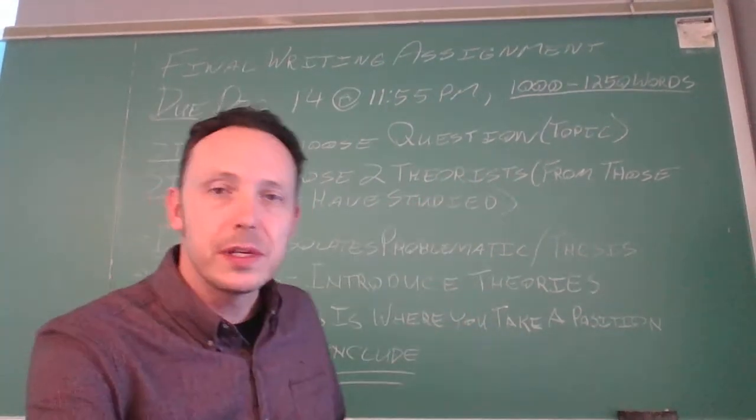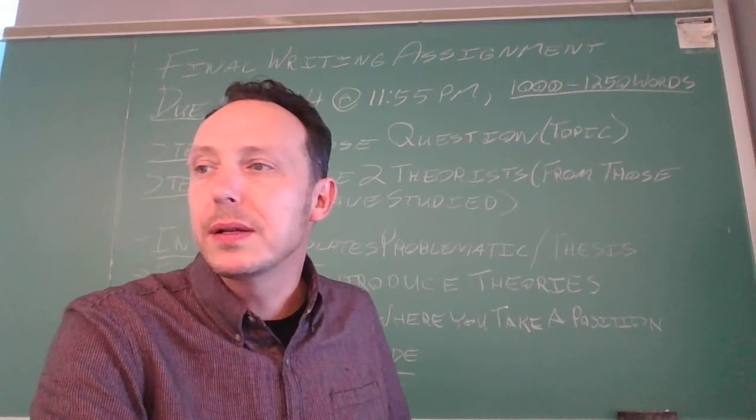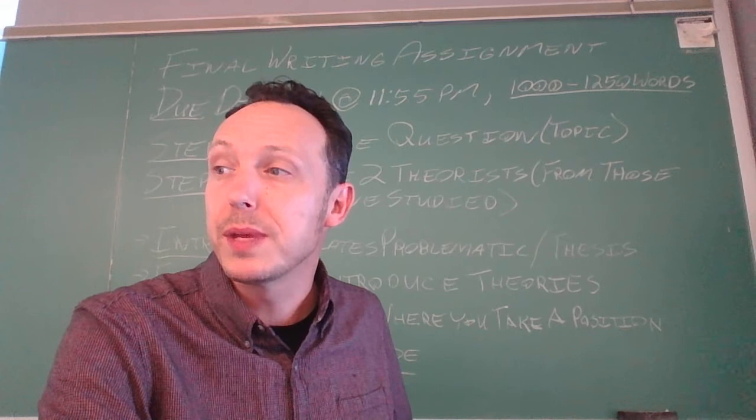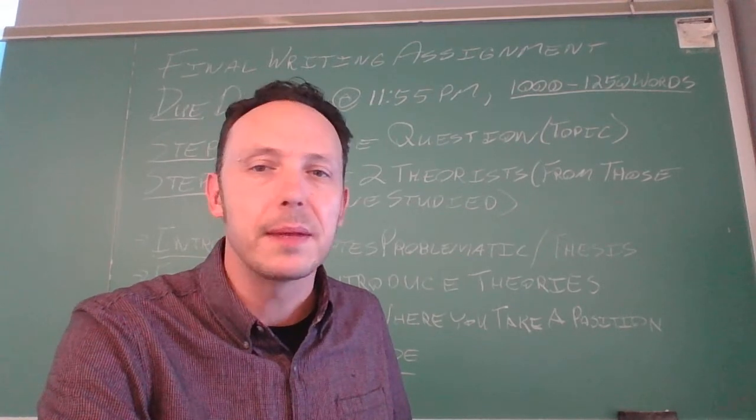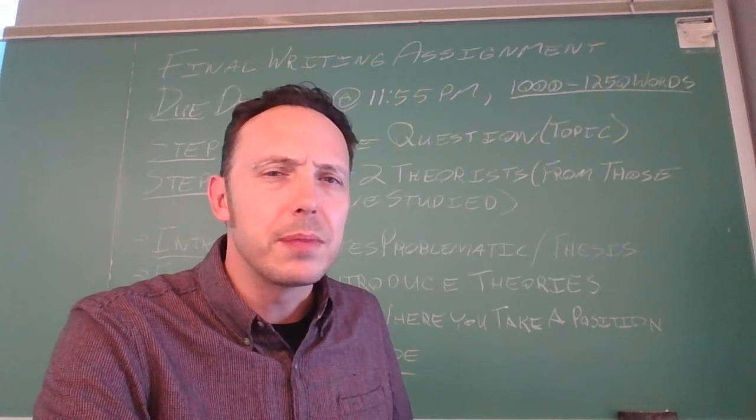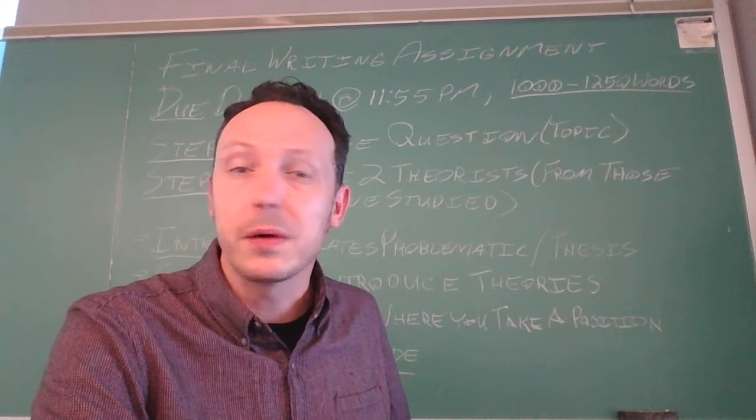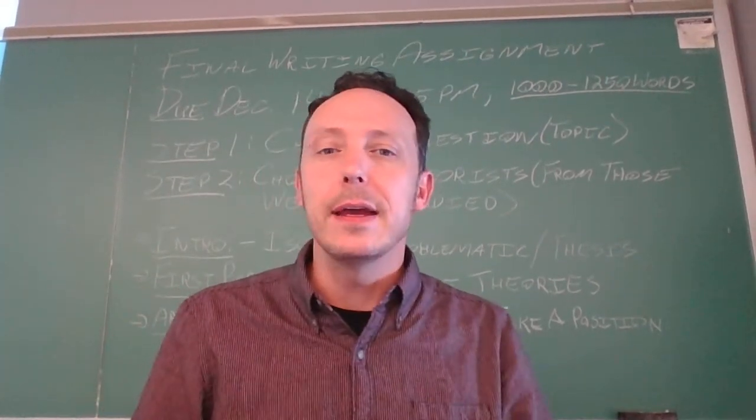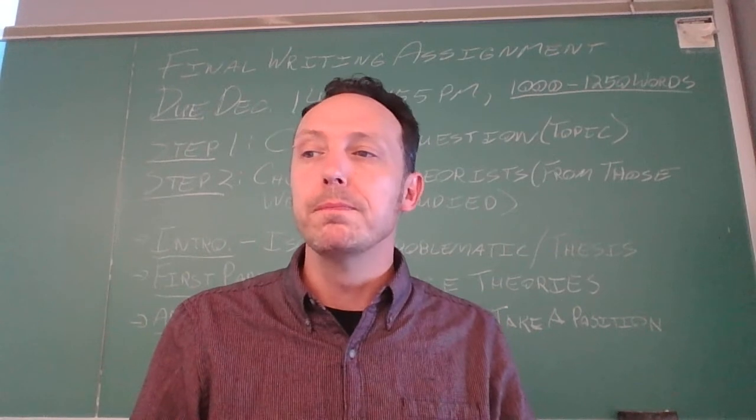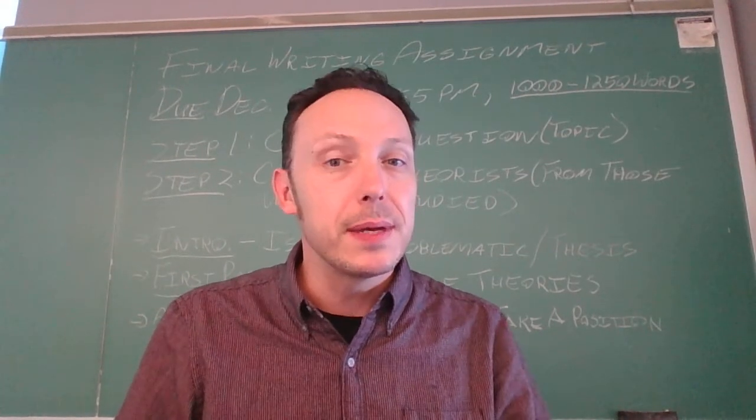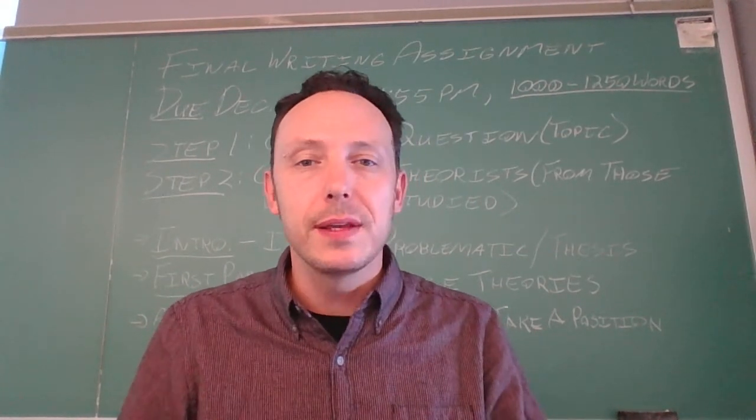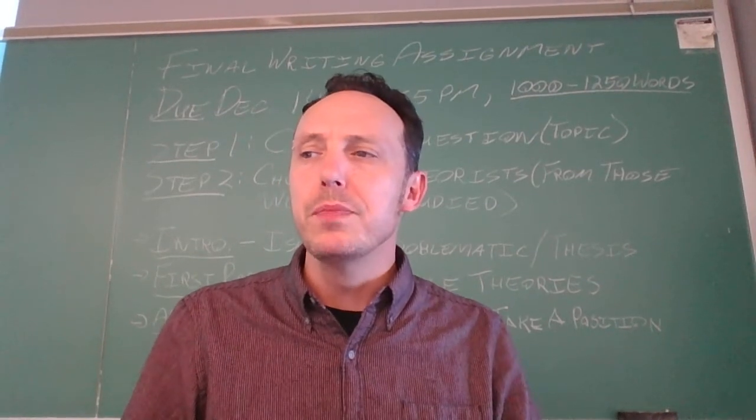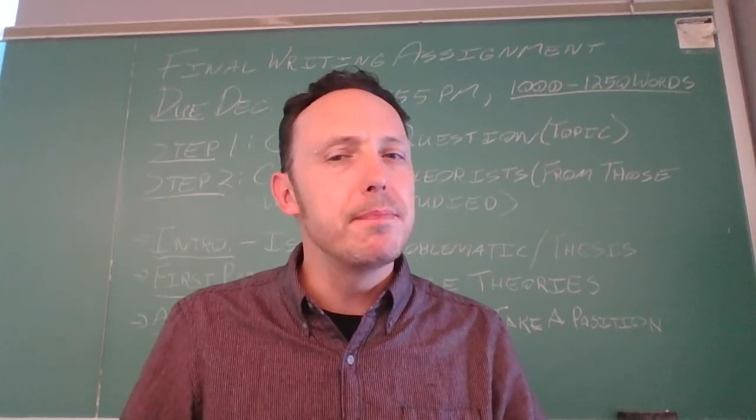So you've picked your question, you've picked your two theorists. Let's pick number one as an example: given the arguments studied in this course, describe the most basic nature or condition of the human being. Why don't we just do something simple like Socrates and Plato as our example. So let's say you pick question number one and let's say you pick Socrates and Plato as the theorists that we've studied in this course to frame your paper.